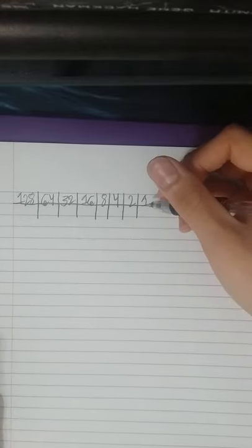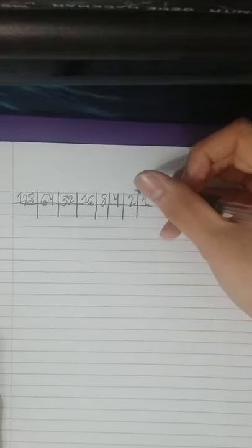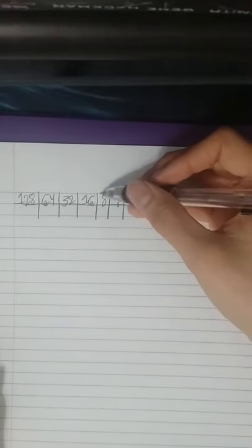It looks something like this. This is our 8 digits which is 1, 2, 4, 8, 16, 32, 64, and 128.